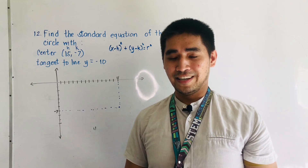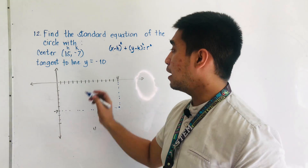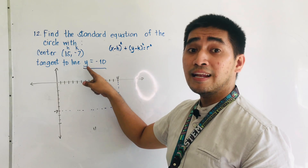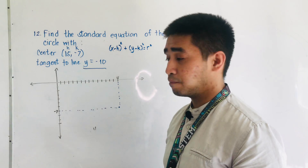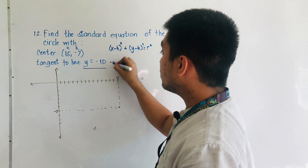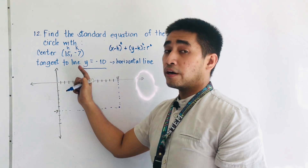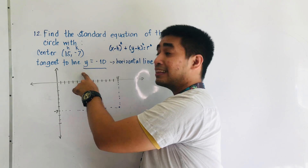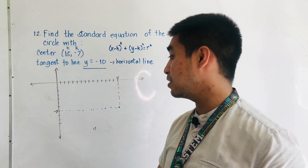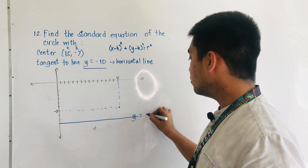But we are given another condition: the circle is tangent to the line y is equal to negative 10. Always remember that if it is tangent to a line y, it is a horizontal line. Let us try to plot y = -10. From negative 7, we go to negative 8, negative 9, and this is now negative 10. So the line y = -10 is a horizontal line.